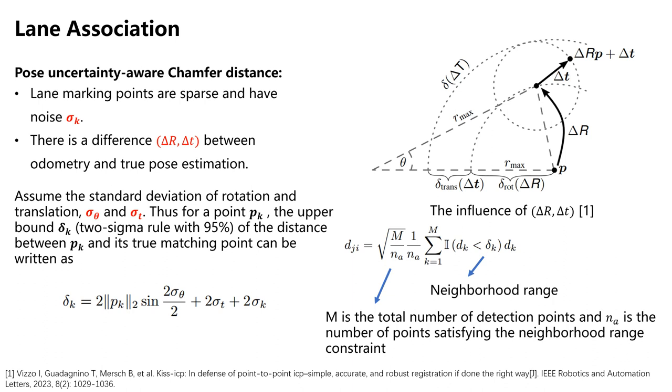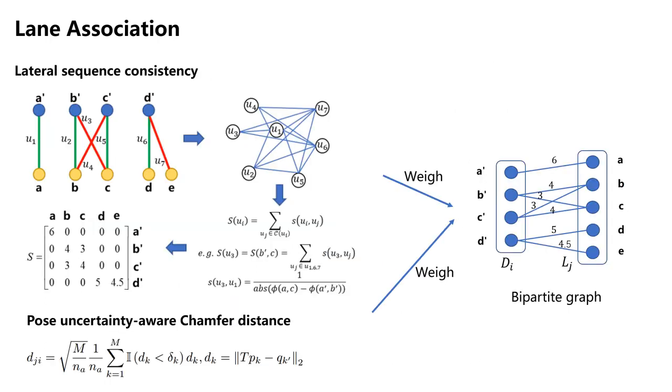Additionally, if the overlap ratio is too small, we consider it as a new lane marking. We also consider the relative positional relationships between lane markings. This is achieved through a second-order graph representation.